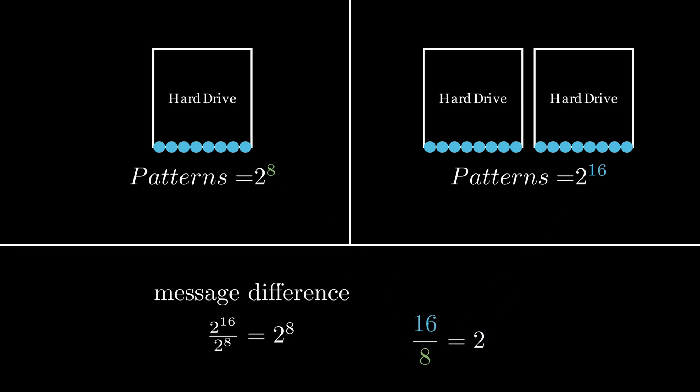But we want our equation for information in a nice compact form, so let's write it out and transform it. Our number of messages is M, and there are 2 to the power of information messages that we can store. To extract our information, we can take the logarithm of both sides, and that gives us the equation for information.